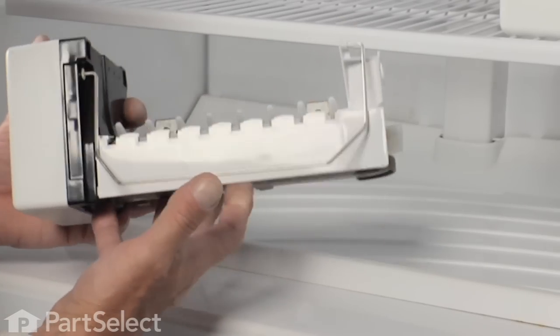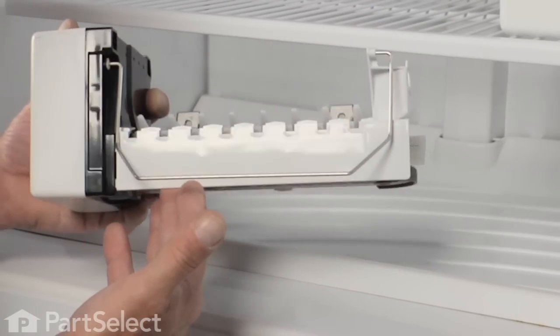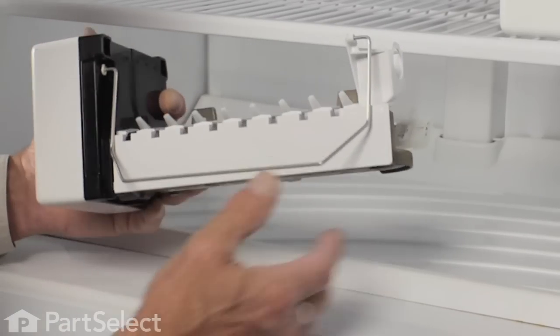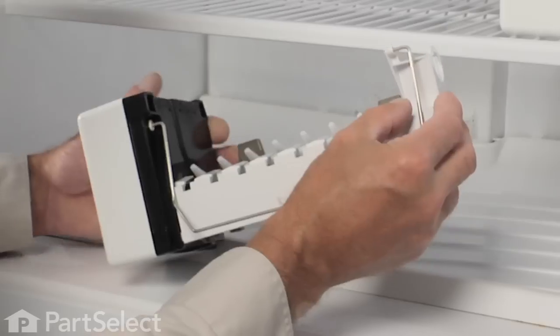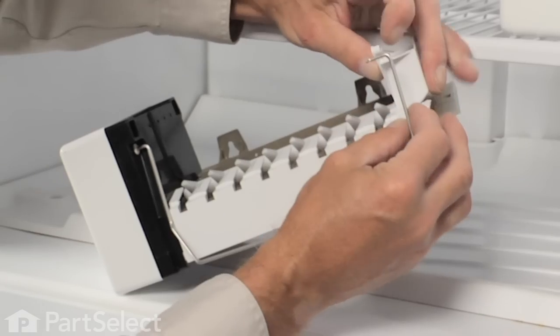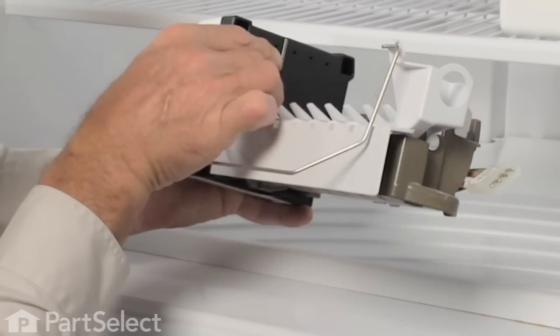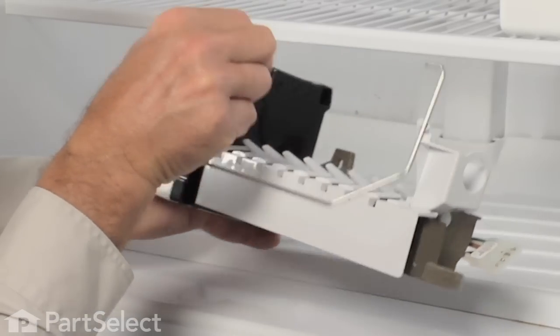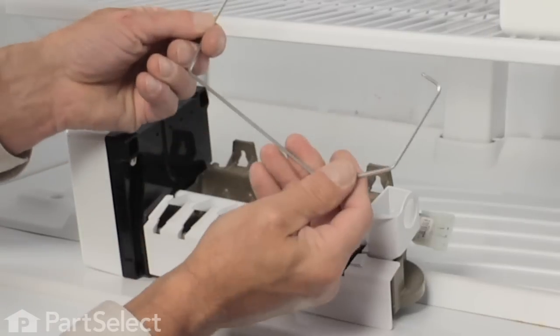The next step we need to do is to transfer the shut-off bail from the old ice maker to install it on our new one. To do that, put it in the off position which is the down position, slide the back end out of the hole and gently pull it out of the front end. There we have it.